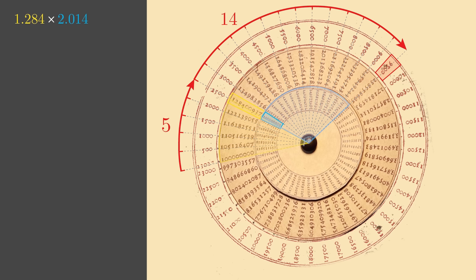So the slide rule itself is performing addition with Berge's red numbers. But since it's labeled with Berge's black numbers, these physical additions are transformed into multiplications.